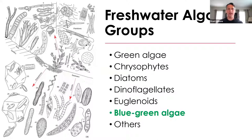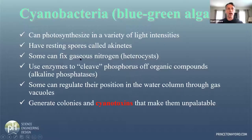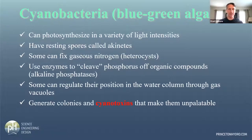There are all kinds of algal groups. Most of them are very beneficial — they're the base of the lake food web. They provide food for the zooplankton, which are the little micro animals in the water, who in turn are food for small fish and then for large fish. The group we'll be talking about specifically are frequently referred to as blue-green algae, but their more technical term is cyanobacteria. They're essentially bacteria that photosynthesize.